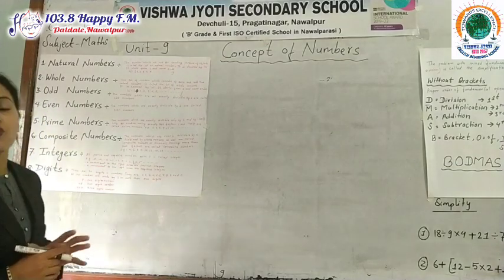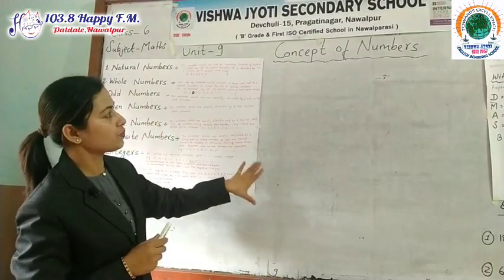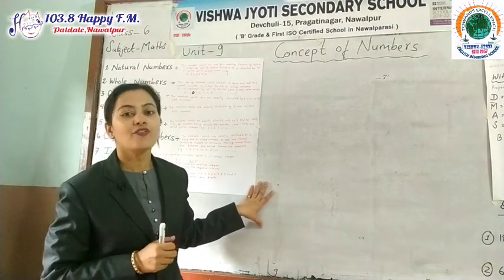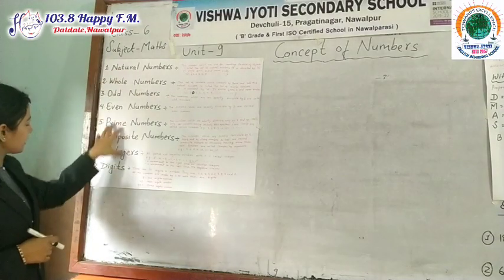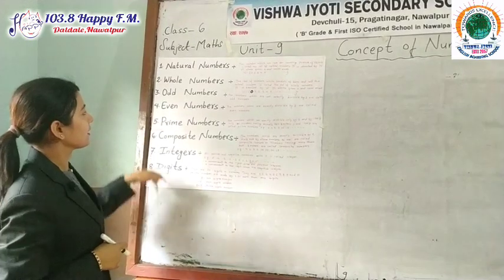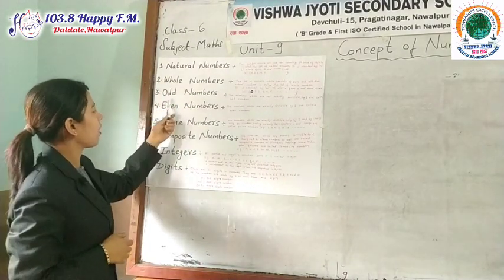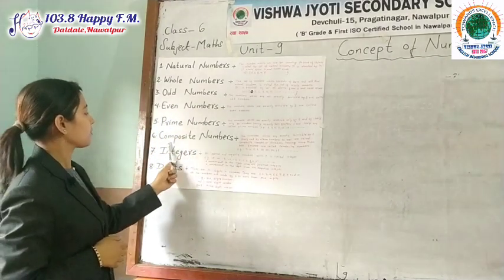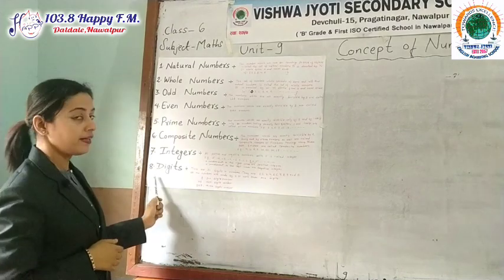In the last video we discussed about geometry. In this video we are going to discuss about different numbers. Today I am going to discuss 8 topics: natural numbers, whole numbers, odd numbers, even numbers, prime numbers, composite numbers, integers, and digits.